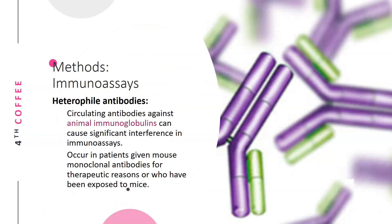Heterophile antibodies are circulating antibodies against animal immunoglobulins and can cause significant interference in immunoassays. They occur in patients who have been given mouse monoclonal antibodies for therapeutic reasons or who have been exposed to mice.